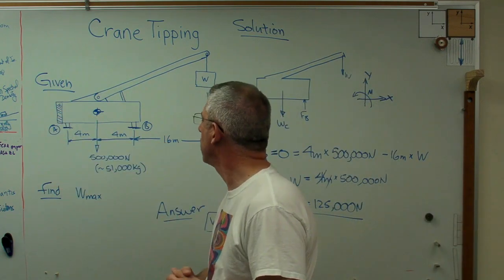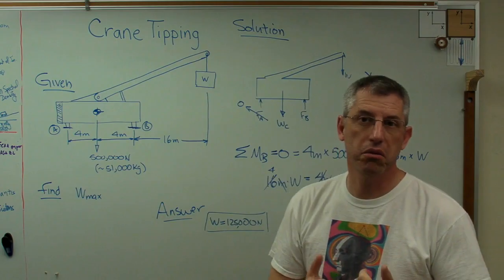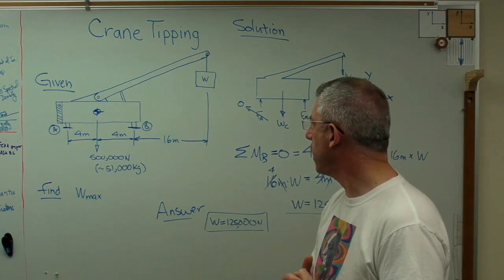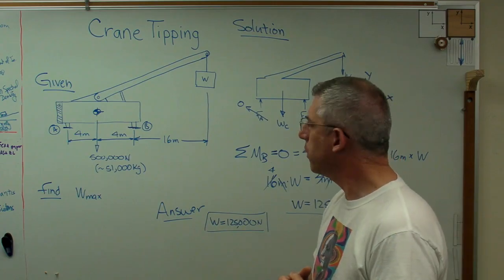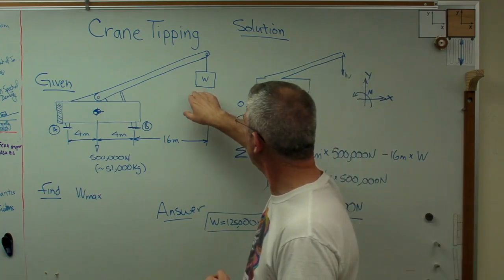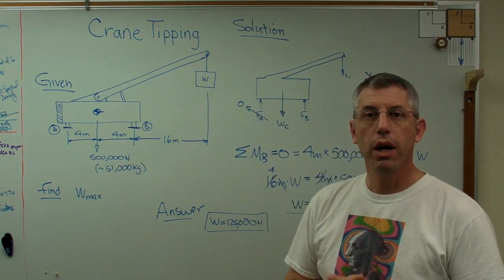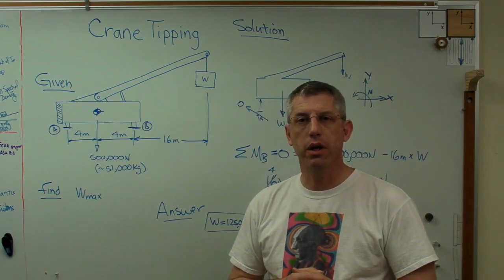If I were to put an extra, say, 10,000 kilograms of counterweight on the back, that's 98,100 newtons. What would I get? What would be the extra weight I could carry? Why don't you figure that out on your own? And a little bit of a homework assignment here.